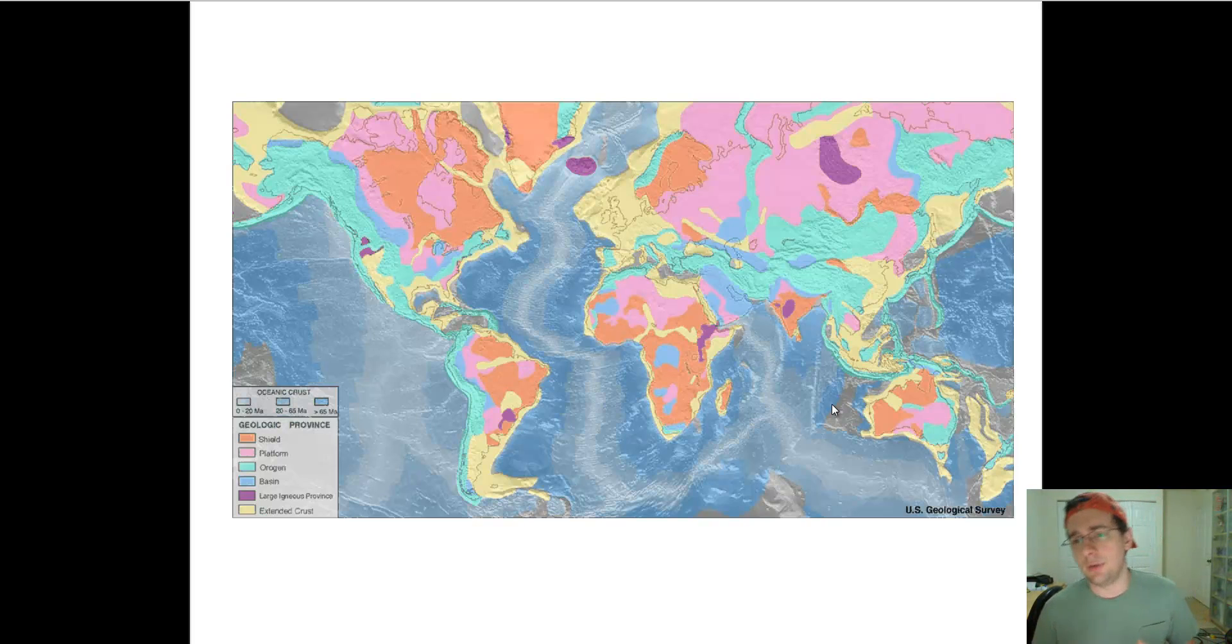The large blocks of continental rock that have been around for billions of years, some since the very beginning, we call those things cratons. Cratons are the large pieces of old continental crust.